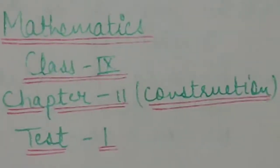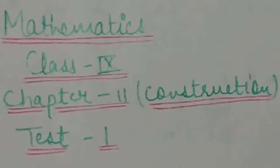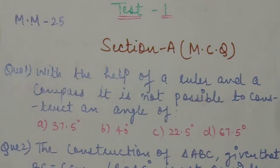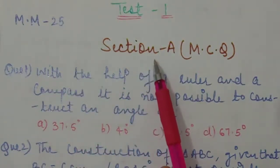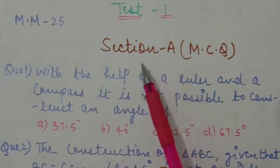This is your first test of chapter number Construction, total marks is 25. In this test, total marks 25, we have four sections: Section A, B, C, and D, and all the different types of questions are here.